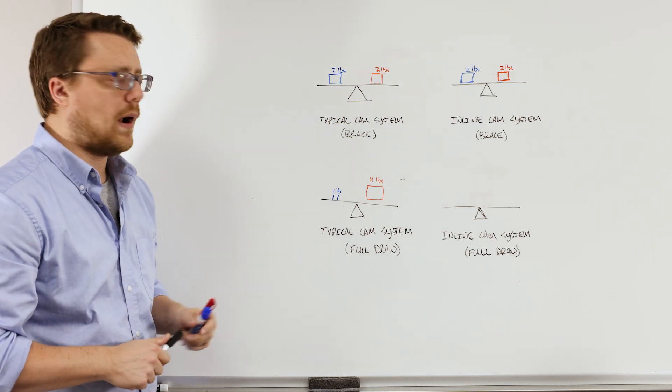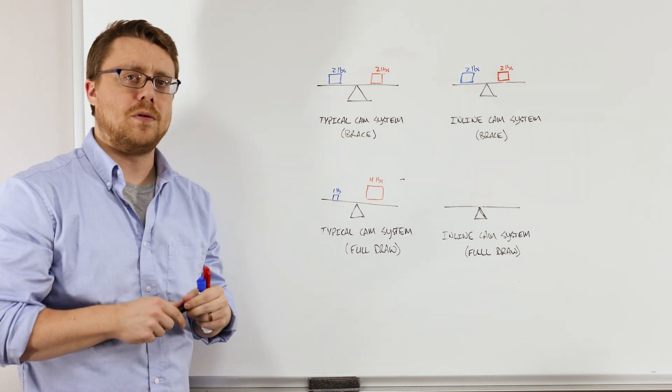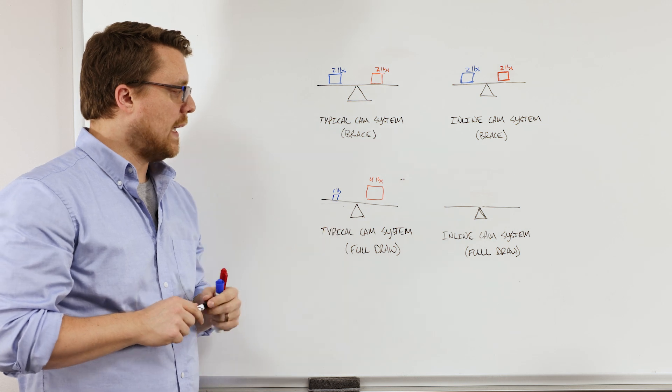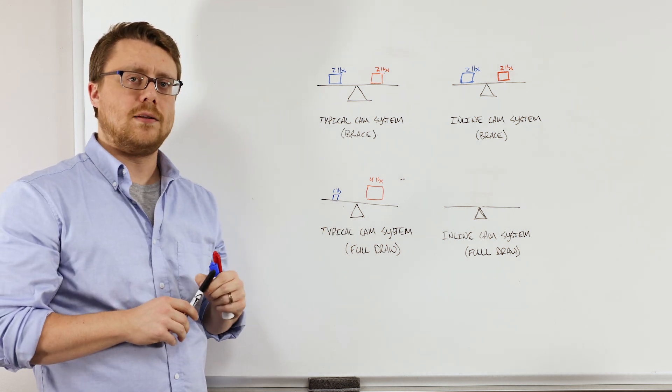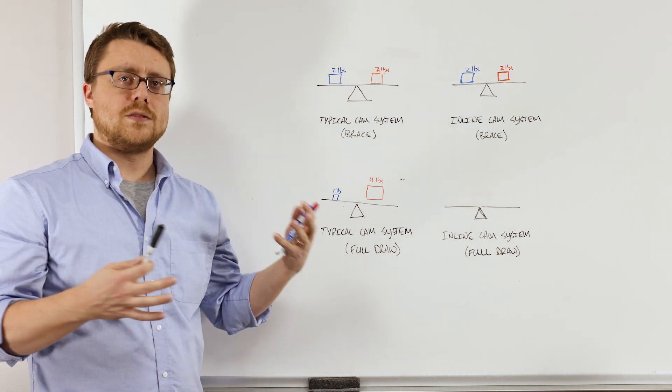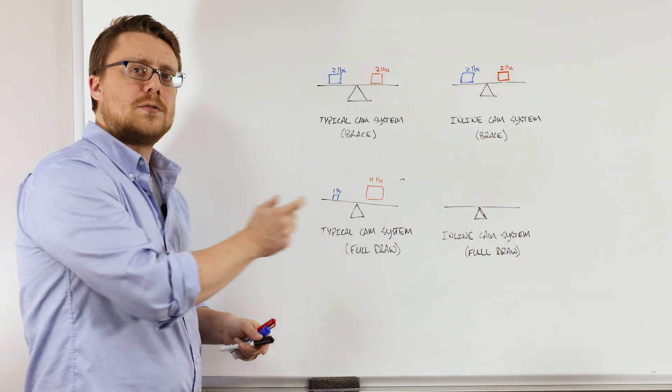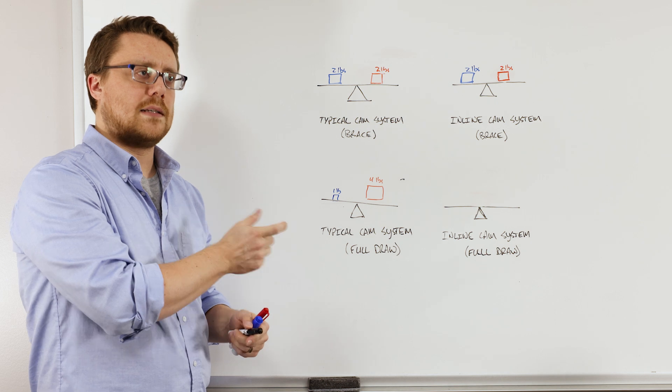So this is the problem with the typical cam system on virtually everybody's bow. Every single person has the same problem. As long as the loads are changing from brace to full draw, you're always going to be struggling with trying to find that exact balance point because it technically changes.